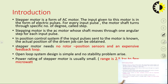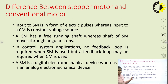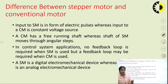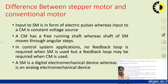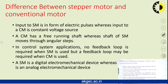Generally this motor is used for small ratings; the range is 2.5 kilowatts to a few microwatts. The stepper motor is different from conventional motors like 3-phase induction motors, synchronous motors, and DC motors such as shunt, series, and compound motors. In a DC motor you apply DC voltage and in an AC motor you apply AC voltage, but in the stepper motor you apply input pulses. The input to the stepper motor is in the form of electric pulses, whereas the input to the conventional motor is a constant voltage source.